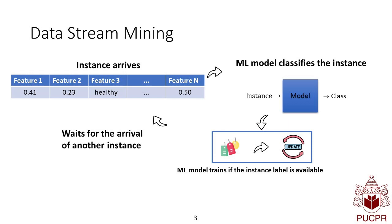The instances arrive continuously, one at a time. When an instance arrives, we must classify this instance that has N features. The models classify this instance, then when the label of this instance is available, we can update the model.